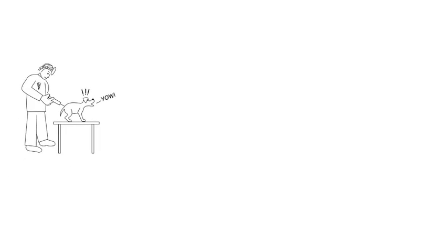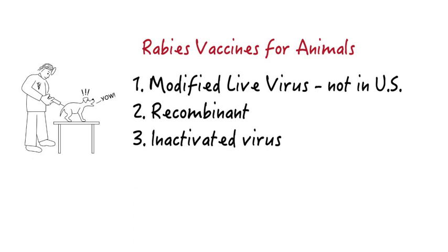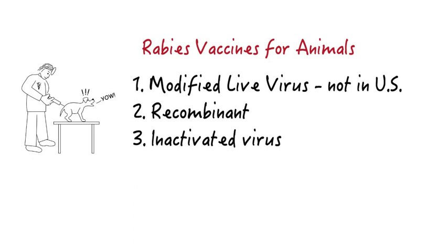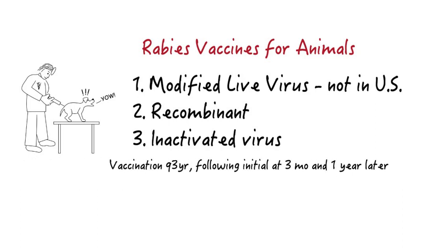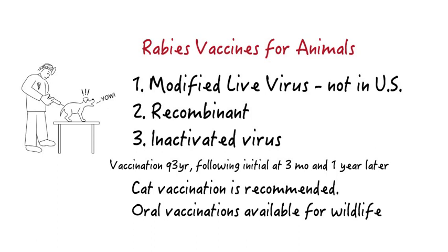Many effective vaccines — such as modified live virus, recombinant, and inactivated types — are available worldwide. No modified live rabies virus vaccines are currently marketed in the U.S. After an initial series of two vaccines one year apart, recommended vaccination frequency is every three years. Because of the increasing importance of rabies in cats, vaccination of cats is now highly recommended. Oral vaccines have only been approved for use in wildlife.